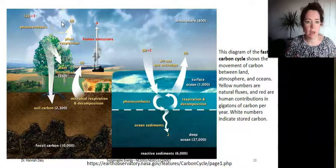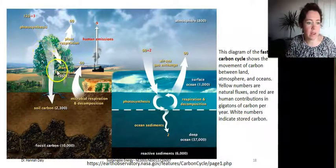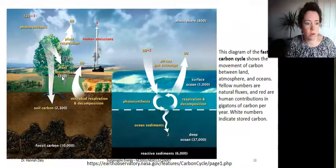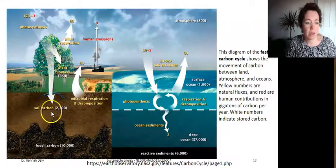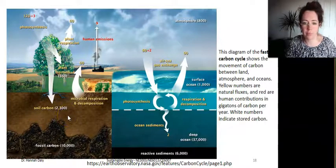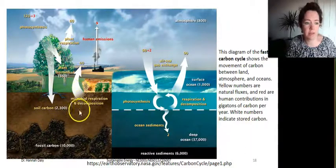CO2 is in the atmosphere at certain concentrations and photosynthesis extracts that and puts it into plant biomass, into another reservoir. Plant biomass then stores carbon into the soil, and over very long timescales in the carbon cycle, different biomass gets stored as fossil carbon.